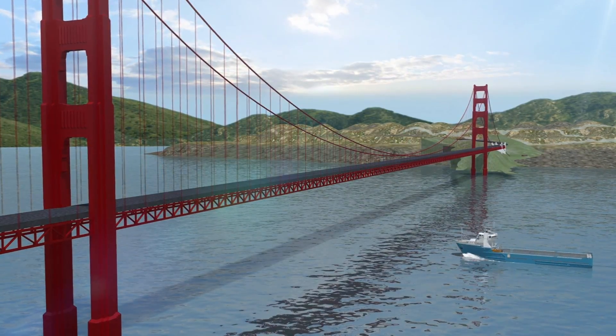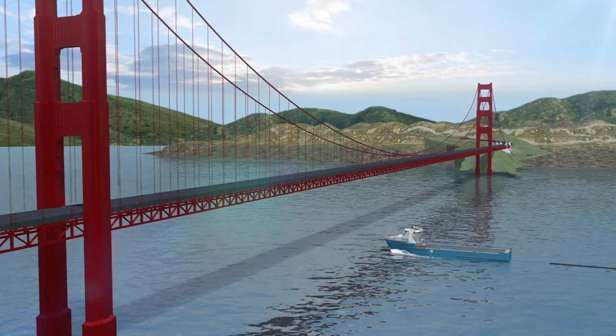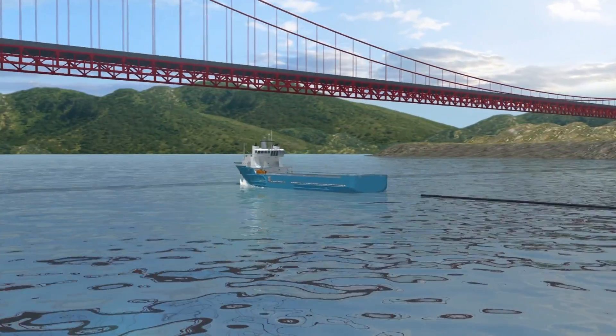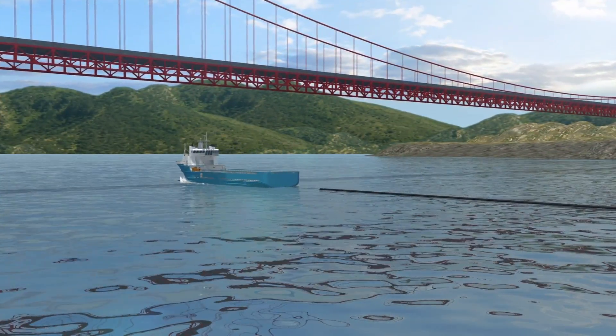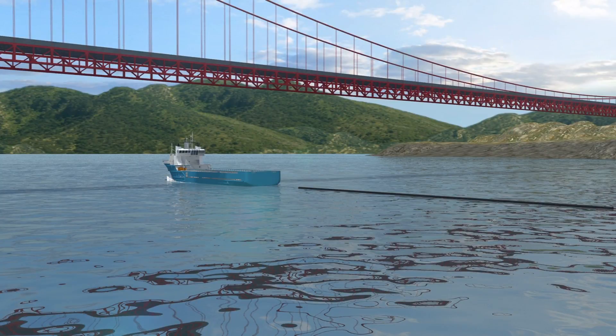The Ocean Cleanup System 001, created by the Ocean Cleanup, left San Francisco in September with an overall goal of cleaning up half of the Great Pacific Garbage Patch in five years and a 90% reduction by 2040.